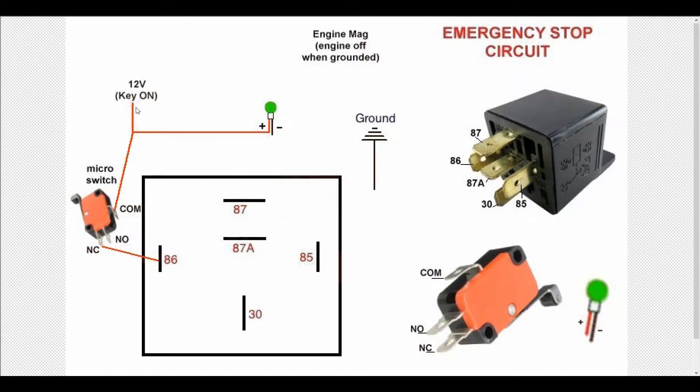Here you see I've wired up the positive side of the circuit. So we have coming from the key when the key is turned on I'm going to be sending power over to the positive side of this light bulb. Also I'm sending power to the common side of the micro switch and then I'm picking up on the normally closed side of the switch and connecting it to pin 86 of the relay. So this is the positive side of the circuit.